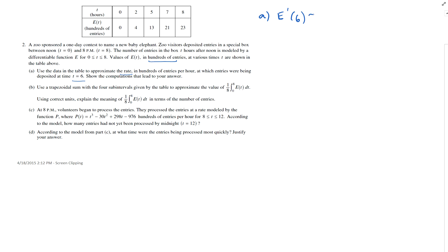Okay, so e prime of 6 approximately equal to, 6 is right in between here, so I'm just going to go e of 7 minus e of 5. This is the secant line over 7 minus 5, which is 21 minus 13 over 7 minus 5, which is 8 over 2, which is 4. 4 what? 4 hundreds of, 400 entries per hour. 400 entries per hour. Okay? Keeping track of my units there.